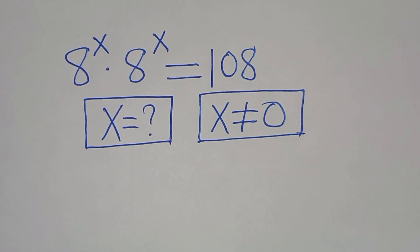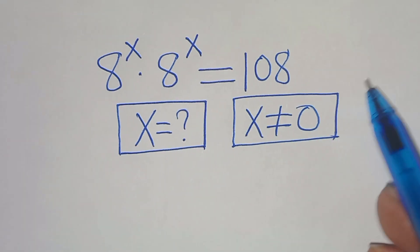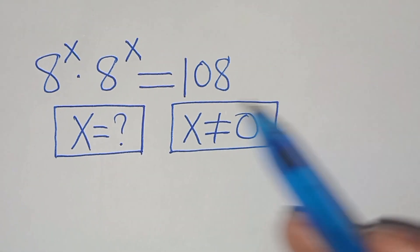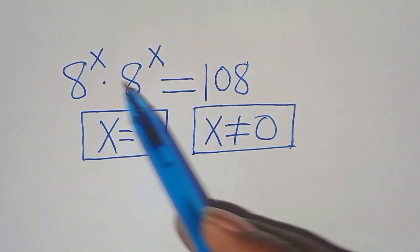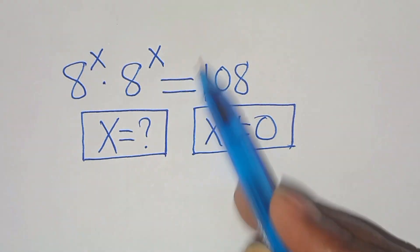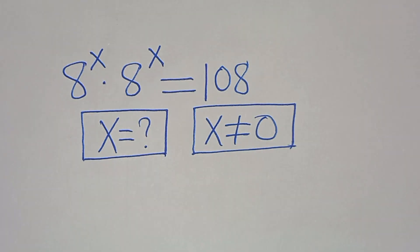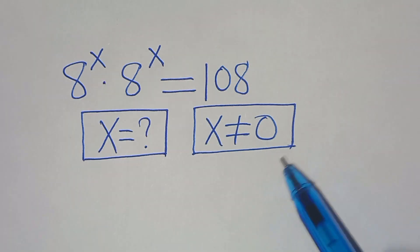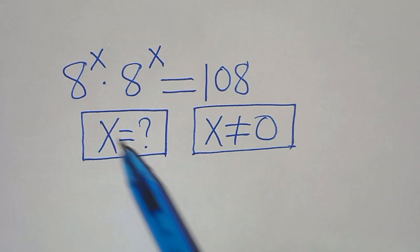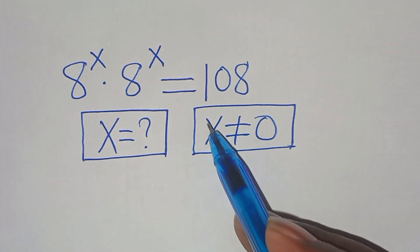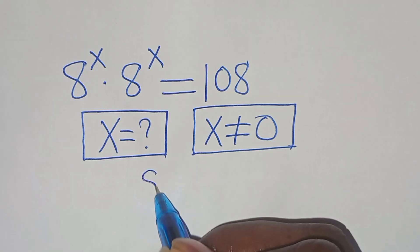Hello everyone, you're welcome. So this nice exponential equation here, which is 8 to the power of x times 8 to the power of x, this is equal to 1/8. So what is the value of x, given that x is not equal to 0?